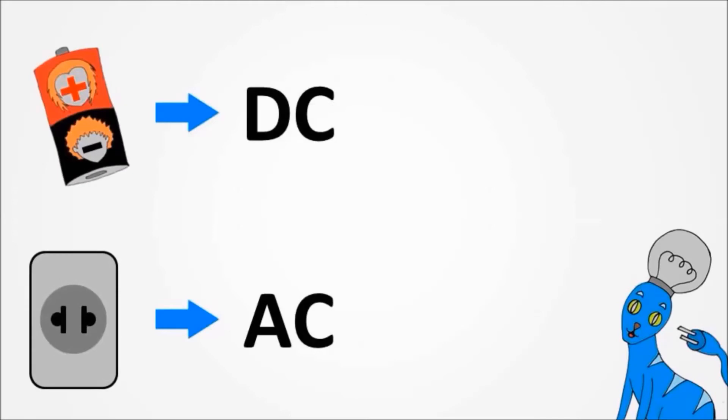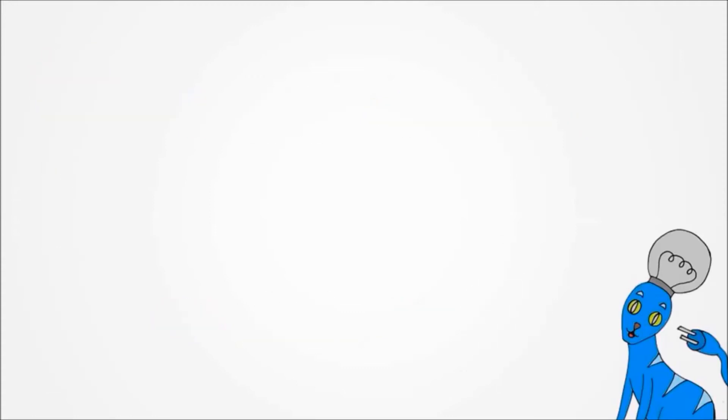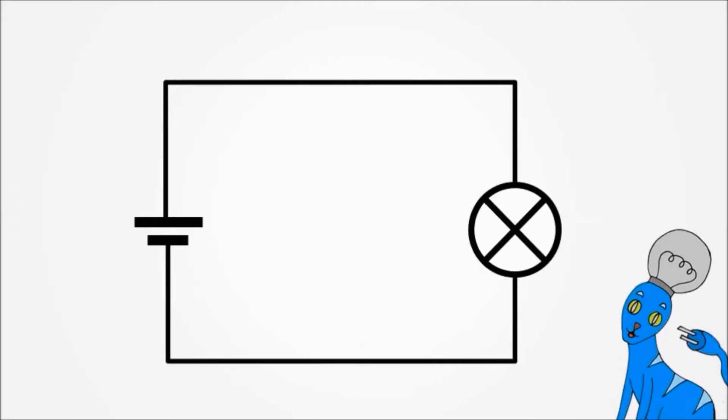To understand the difference between them, first, take a look at these symbols. They will be used in circuit diagrams. In this circuit, we have a DC charge and a light bulb.